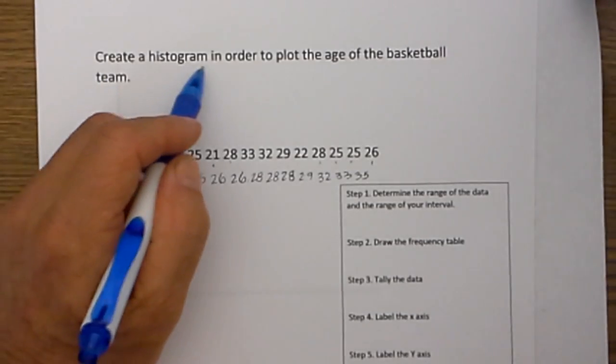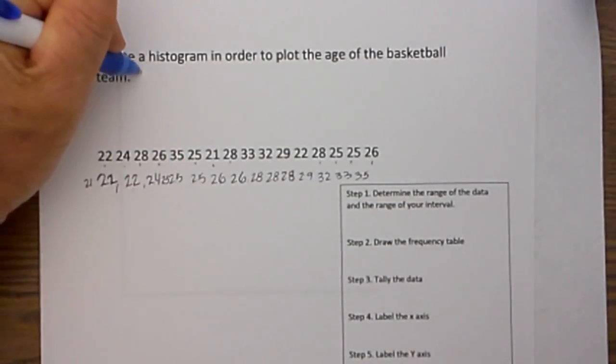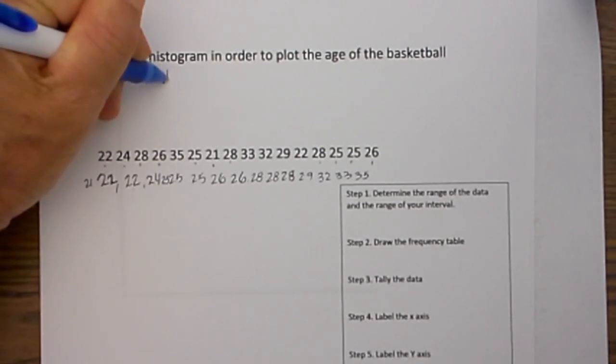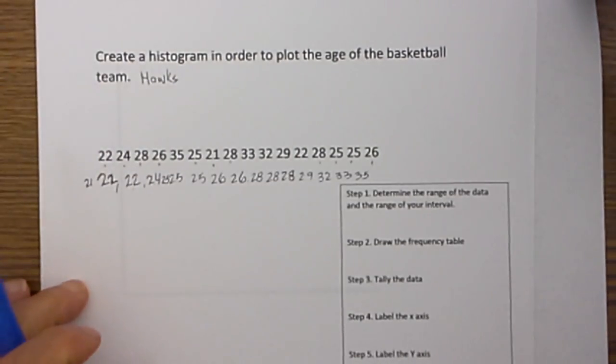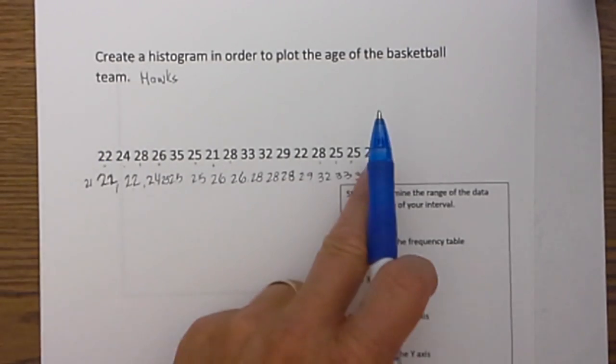It says create a histogram in order to plot the age of the basketball team, and I'm going to call this team the Hawks. Here are the ages of the players, 22, 24, and you can see the rest.